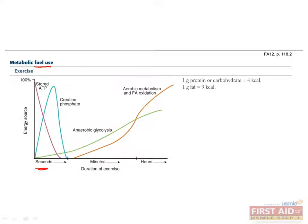In the first few seconds of running, stored ATP, creatine phosphate, and anaerobic glycolysis are used to provide energy. After a few seconds, the stored ATP becomes depleted, and oxidative phosphorylation is used to get the most efficient ATP production from glucose. When exercising for hours, such as in a marathon, both glycogenolysis and free fatty acid oxidation are used to make ATP.